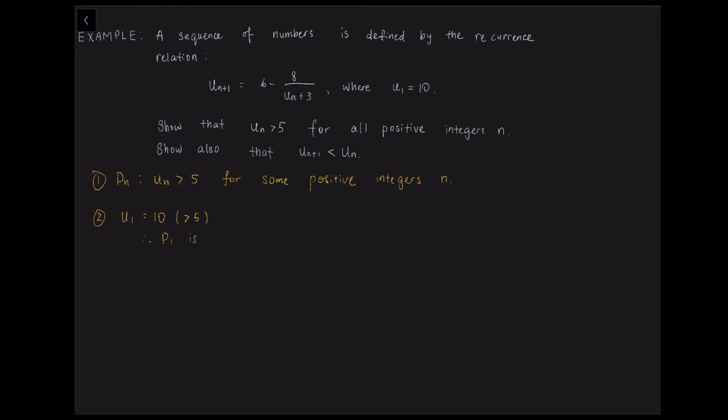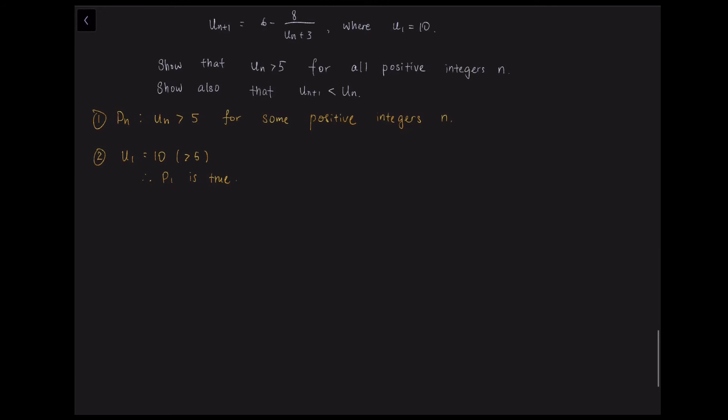And what about the third step? The third step is also very simple. You just have to assume pk is true, which is uk must be larger than 5. And the fourth step is to prove pk plus 1. So this is a different way.